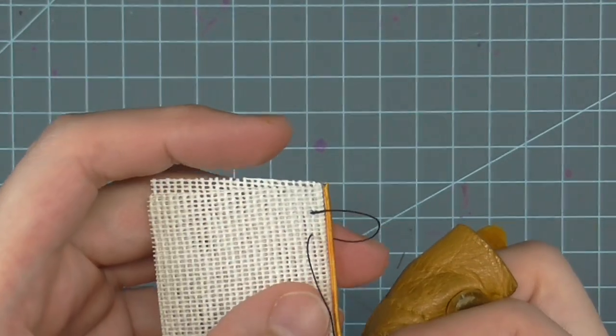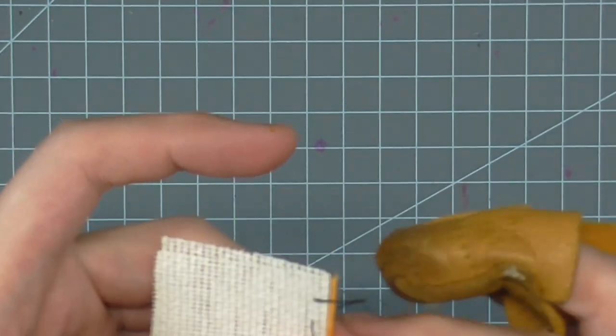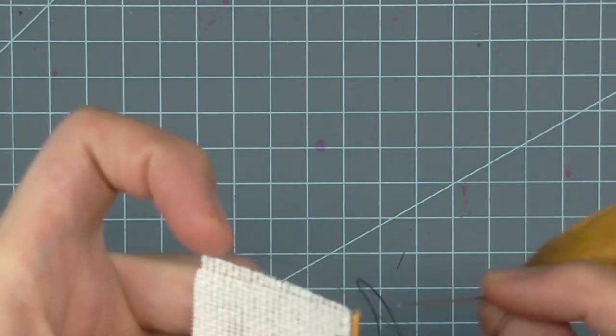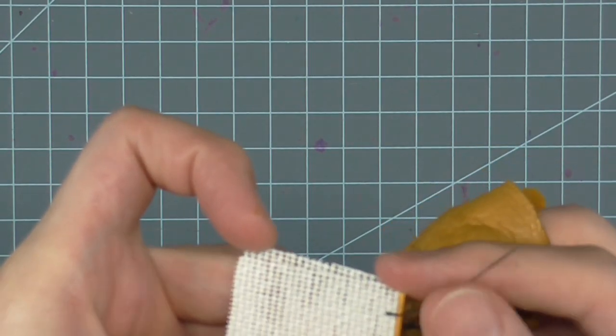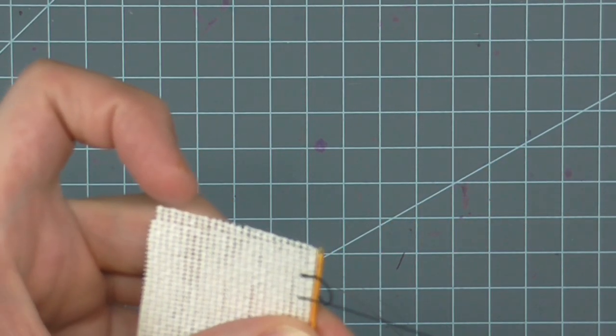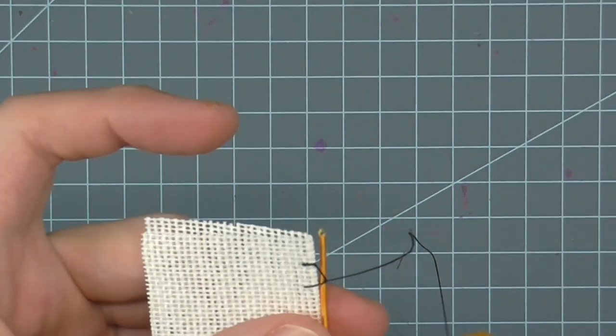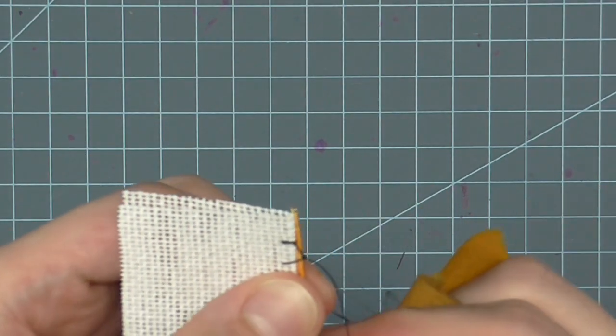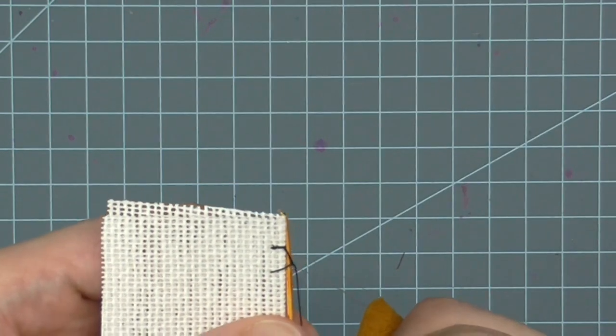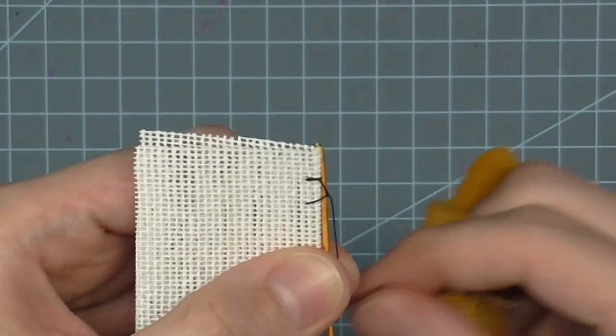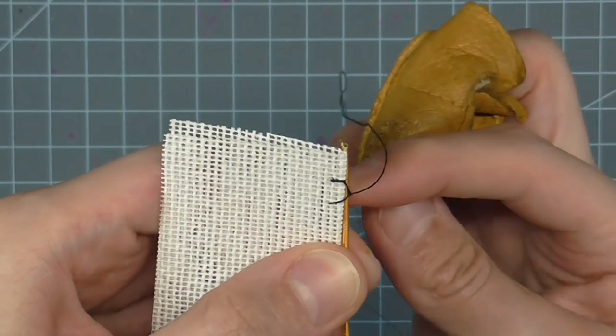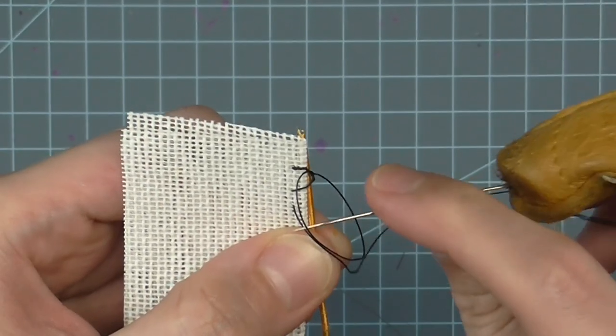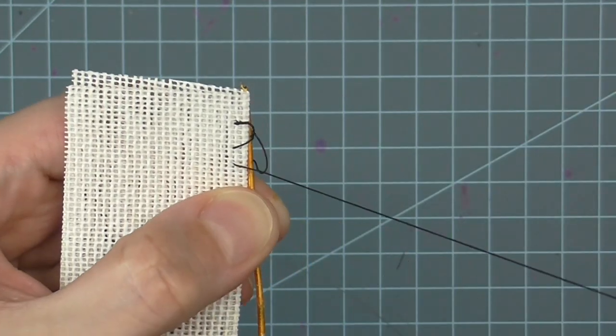Place the wire in the loop. Run the needle through the loop from behind, then tighten up the thread. Continue stitching, as explained earlier, the length of the sample piece. Be sure to keep the wire on the edge as you sew.